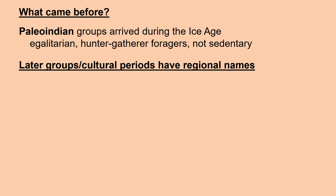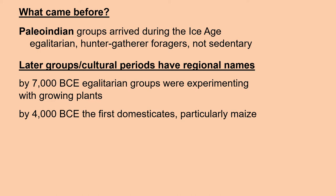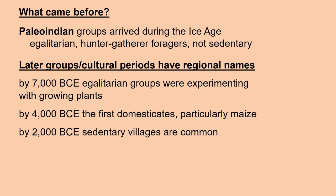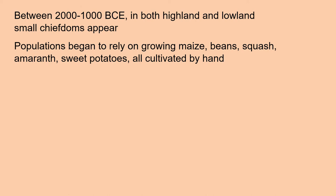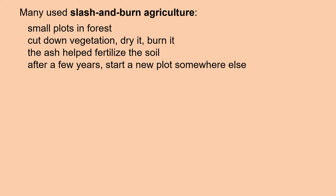Later groups and cultural periods after the Paleo-Indian have regional names. But by 7,000 before the Common Era, egalitarian groups were experimenting with growing plants. By 4,000 before the Common Era, we see the first domesticates, especially maize. By 2,000 before the Common Era, sedentary villages are common. Between 2,000 and 1,000 before the Common Era, in both the highlands and the lowlands, small chiefdoms appear, and populations began to rely on growing maize, beans, squash, amaranth, and sweet potatoes, all cultivated by hand. And from the earliest time, we see trade networks throughout the entire area.